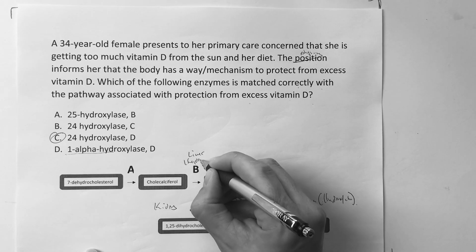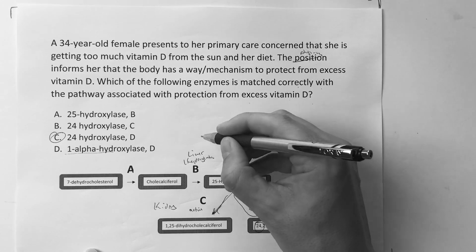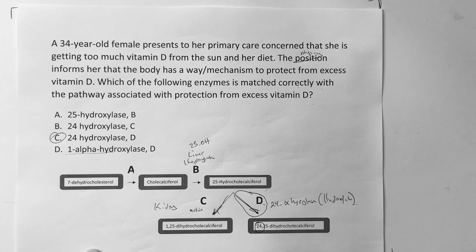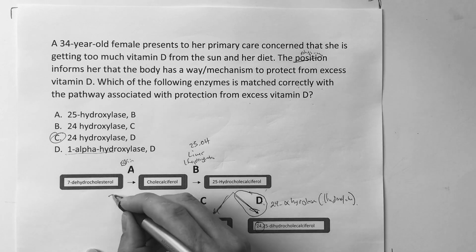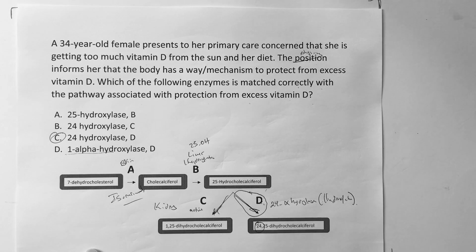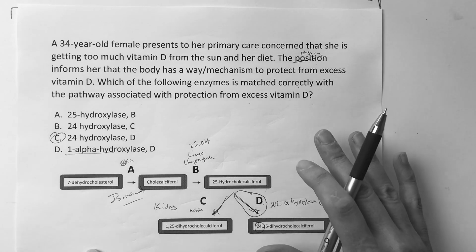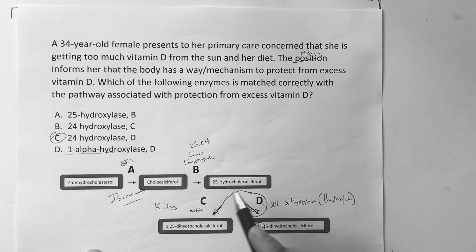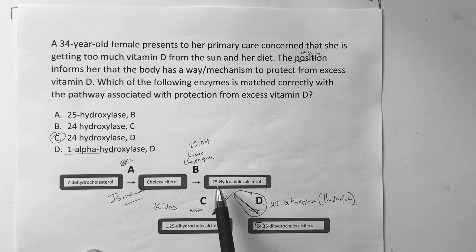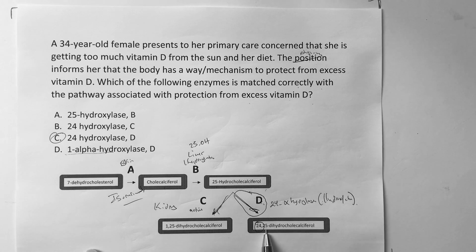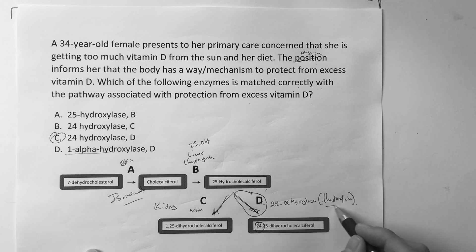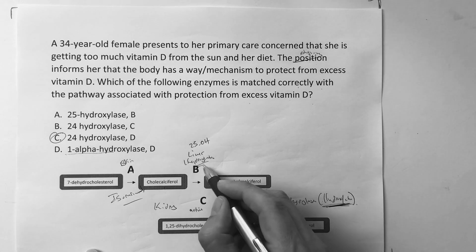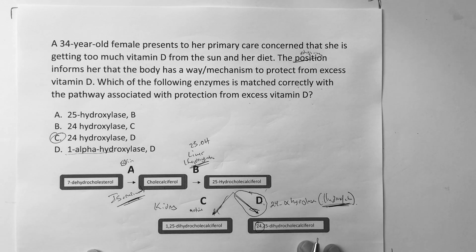For vitamin D questions, just know the basic pathway: 7-dehydrocholesterol → cholecalciferol → 25-OH → 1,25 and 24,25. Walk the numbers backward for your enzymes. Know the locations: skin, liver, kidney. And to go to the next level, know that the last two steps are hydroxylations and the first step is an isomerization. Hope this helps!